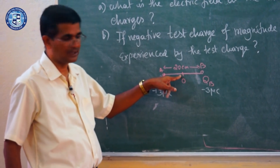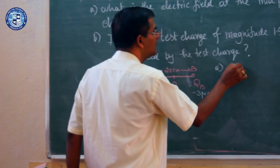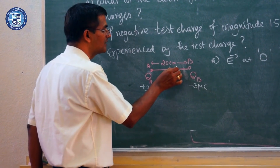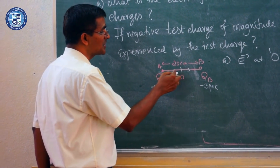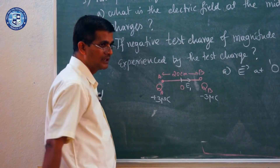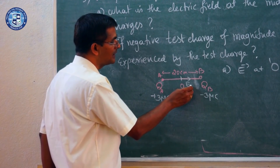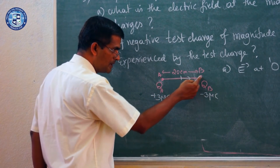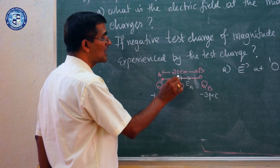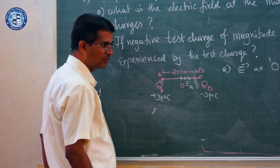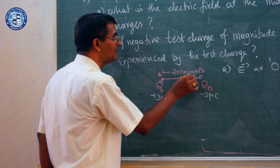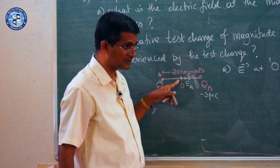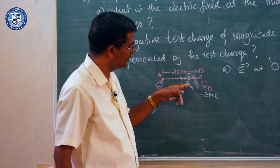First, we find the electric field at midpoint O. We analyze the direction of the electric field. If I place a test charge at point O, it will experience a repulsive force from charge A. As a result, the electric field EA due to charge A is directed along OB. Due to the negative charge B, the test charge experiences an attractive force, so the electric field EB due to charge B is also in the same direction, along AB. The total electric field at O is the sum of these two fields.